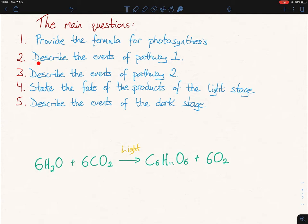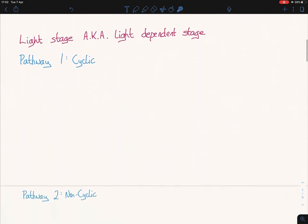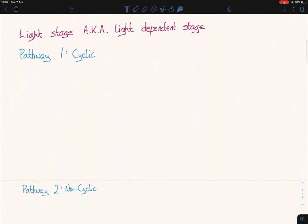The second one says, describe the events of pathway 1 and the third one, describe the events of pathway 2. Both pathway 1 and pathway 2 are known as the light stage, which is also known as the light-dependent stage. Pathway 1 and pathway 2 belong to the light stage and they're actually both similar in a lot of ways. They're just slightly different in terms of the electrons. Let's get started. Pathway 1 is known as cyclic. Light energizes one electron which leaves a chlorophyll molecule.